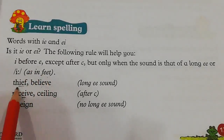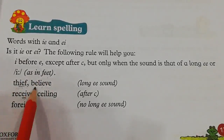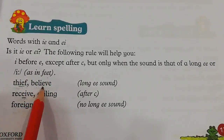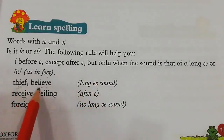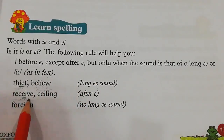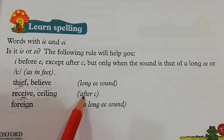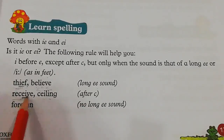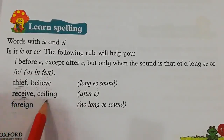If you look here, words are given to us. Thief — T-H-I-E-F. Believe — B-E-L-I-E-V-E. We will make a long E sound, so we write I-E: thief, believe. Next words are receive — R-E-C-E-I-V-E — and ceiling — C-E-I-L-I-N-G. After C, we will put E-I. We will make long E sounds in these words too: receive, ceiling.